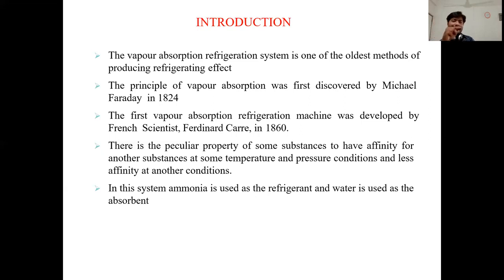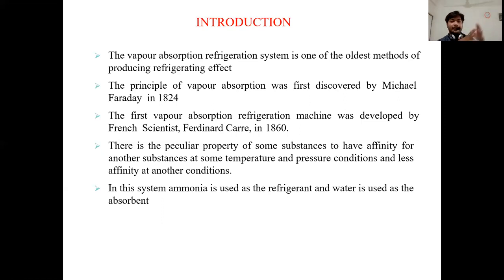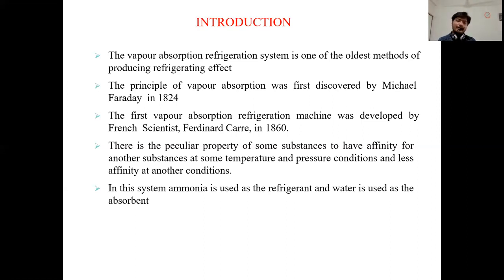Vapor is absorbed by water — water is the absorbent and ammonia is the refrigerant in vapor form, which is absorbed into the water. That is why the system is named Vapor Absorption Refrigeration System. Another example is lithium bromide with water — substances that have an affinity for one another at certain temperature and pressure conditions. In this system, ammonia is used as refrigerant and water is used as absorbent.